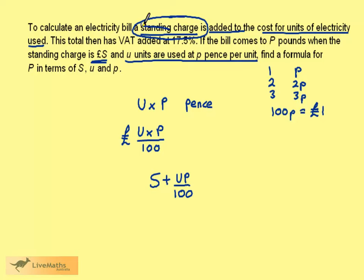We now need to add VAT at 17.5%. This represents 100%. We then add the 17.5% VAT, so the final bill paid represents 117.5%. As a decimal, this is 1.175.